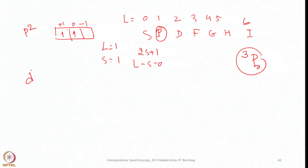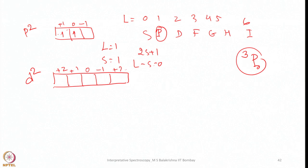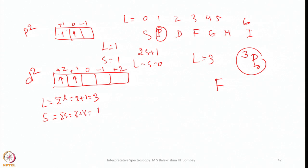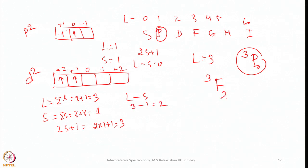Now let us look at the D2 system. Write the azimuthal quantum numbers: plus 2, plus 1, 0, minus 1, minus 2. Place one electron at ml equals plus 2 and one at ml equals plus 1. Then sigma L equals 2 plus 1 equals 3, so L equals 3, which means F. S equals 1/2 plus 1/2 equals 1, so 2S+1 equals 3. Since the subshell is less than half-filled, J equals L minus S equals 3 minus 1 equals 2. The term symbol for D2 is 3F2.